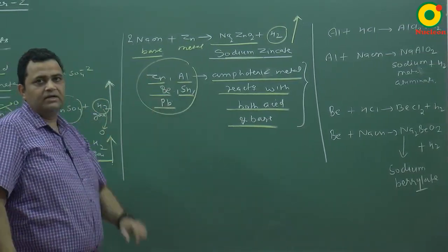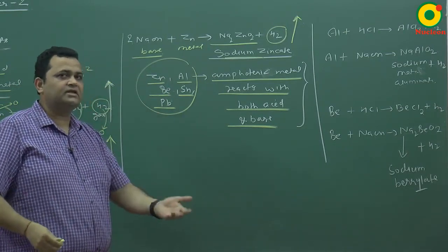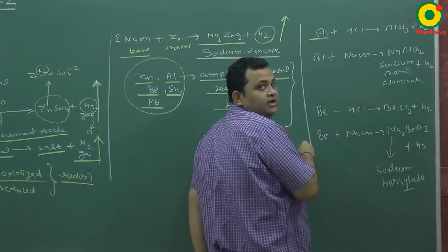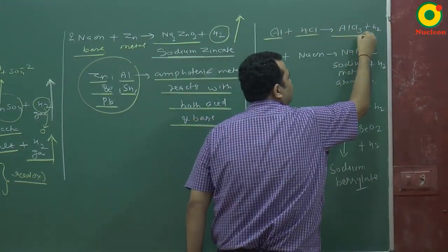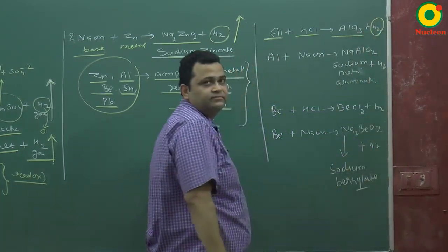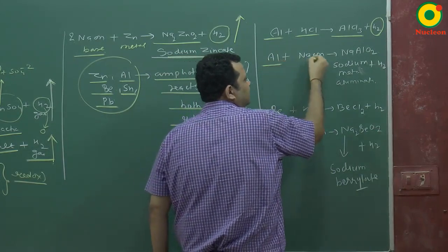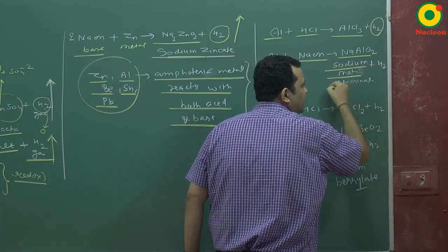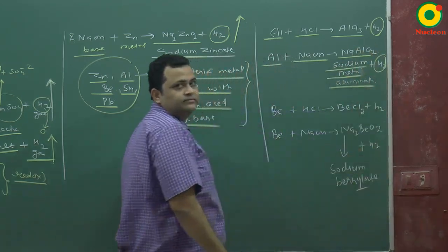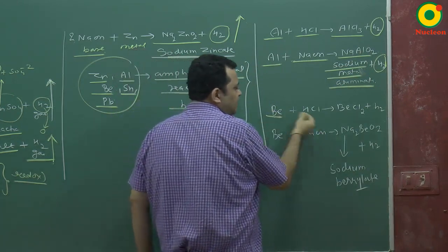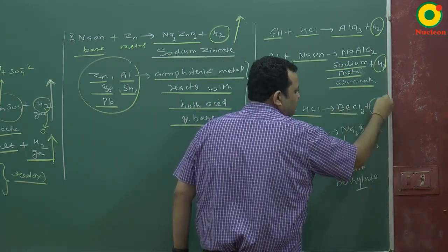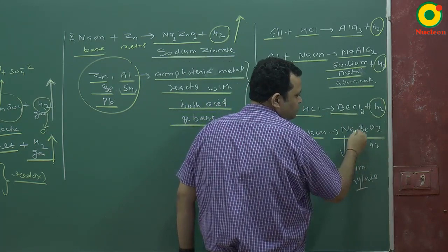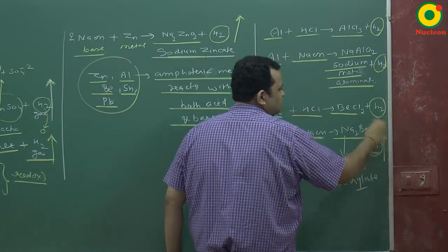All these amphoteric metals can react with both acid and base. For example, aluminium reacts with HCl to form AlCl3 and hydrogen gas. Similarly, aluminium reacts with NaOH base to form NaAlO2 (sodium meta-aluminate) and hydrogen gas. Beryllium reacts with HCl to form BeCl2 and hydrogen gas, and beryllium reacts with NaOH to form sodium beryllate Na2BeO2 along with hydrogen gas.